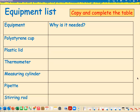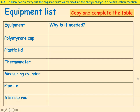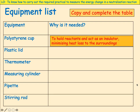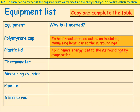The polystyrene cup: polystyrene is an insulator. We're using it to hold the reactants but also act as an insulator, so we're not going to lose the energy we're trying to measure. By being an insulator rather than a metal cup, we're minimising heat loss to the surroundings. The plastic lid is to minimise energy loss to the surroundings by evaporation.